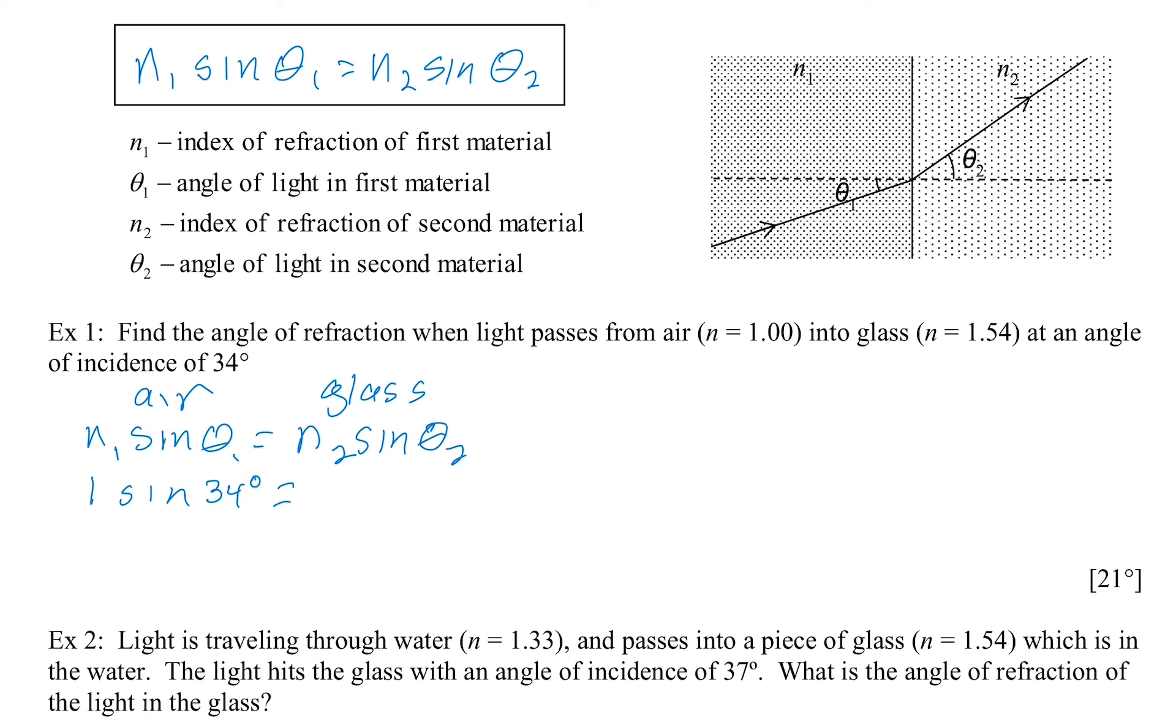For glass, the 1.54, that's the index of refraction of 1.54. And find the angle of refraction. The angle of refraction is the light coming out of the surface. And so that's when it's in the glass, it's coming out of the surface. So that makes sense. We don't know what that is. That's what we're looking for.